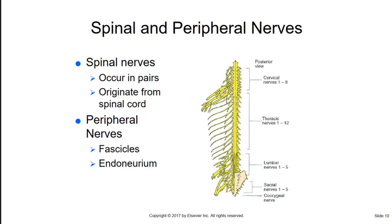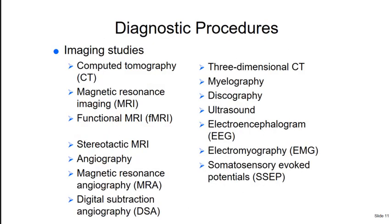Spinal nerves also occur in pairs and originate from the spinal cord near their corresponding vertebrae — for example, cervical spinal nerves correspond to the cervical section of the spine. The peripheral nerves are composed of small bundles of nerve fibers called fascicles, surrounded by a sheath called the endoneurium. Imaging studies performed before neurosurgery include the electroencephalogram (EEG), which measures electrical activity of the brain and can identify seizure disorders, head injury, or dementia, and the electromyography (EMG), which measures the conduction rate of motor nerves.